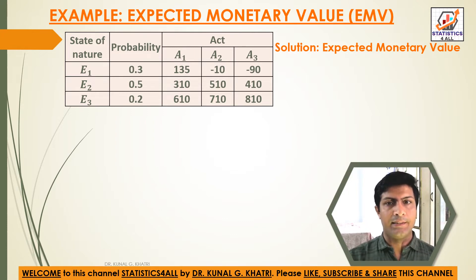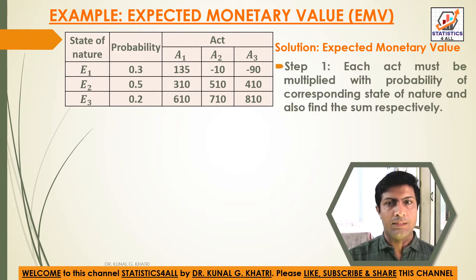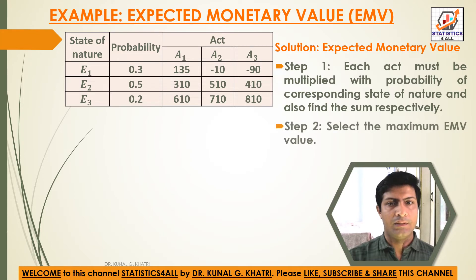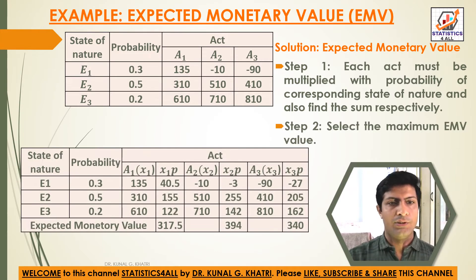Solution — Expected Monetary Value. Step 1: Each act value must be multiplied with the probability of the corresponding state of nature, and find the sum respectively. Step 2: Select the maximum EMV value.